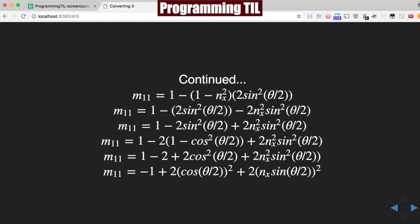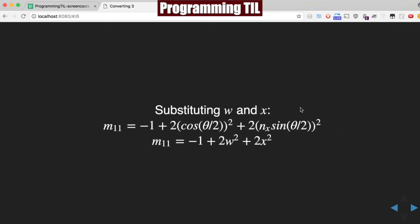It's really not that important, to be honest. But when we get to the final formula here, we can finally substitute W and X because we have terms of nx sine squared over 2, sine theta over 2, and cosine theta over 2. That's our formula right here for M11.